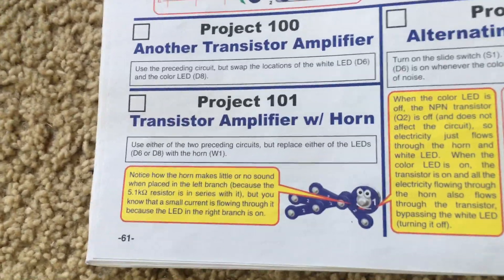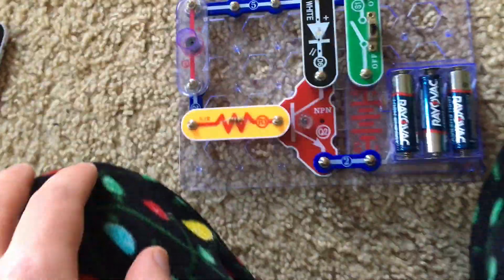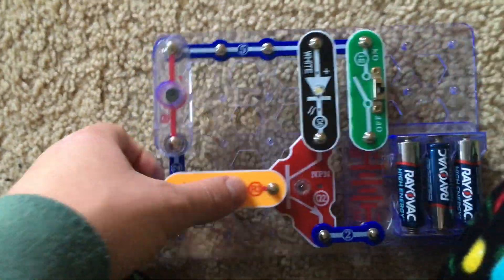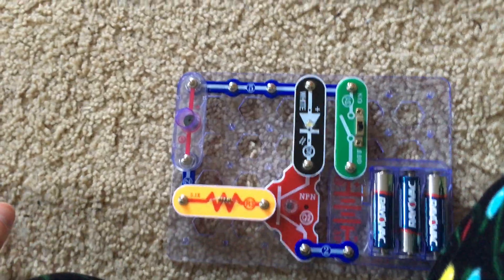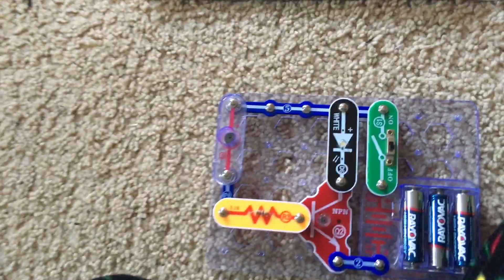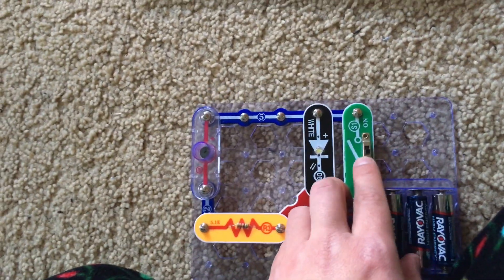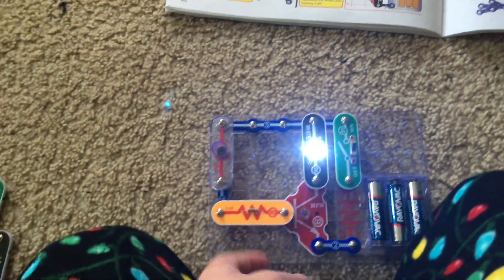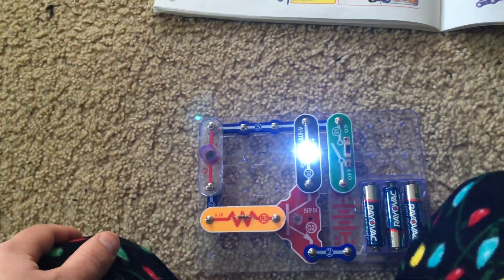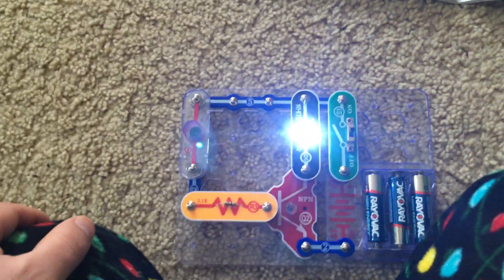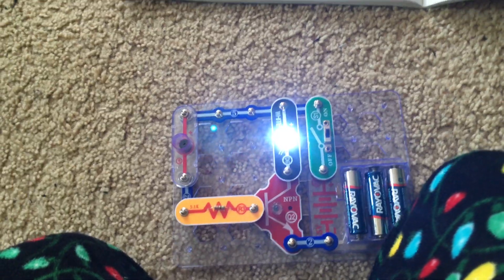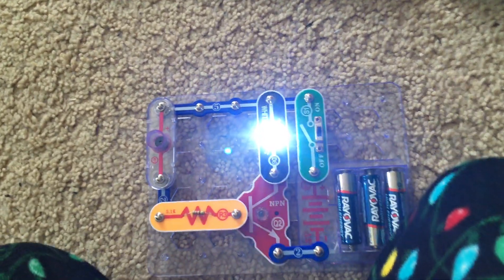Transistor amplifier with horn. Using either project 99 or 100, we will replace either the color LED or the white LED with the horn and turn on the slide switch. When the horn is on the left it does not sound because the current flowing through the left branch of the MPN transistor is minute compared to the current flowing on the white.